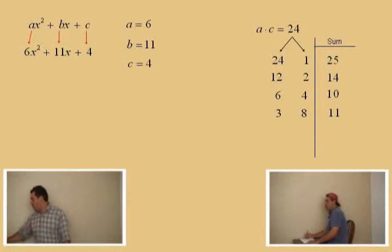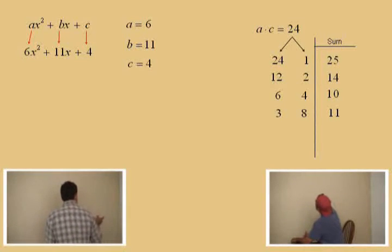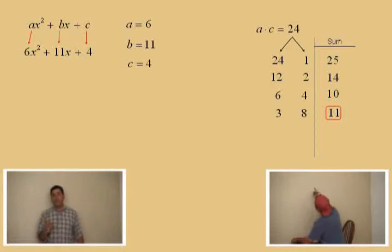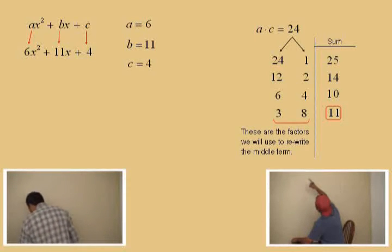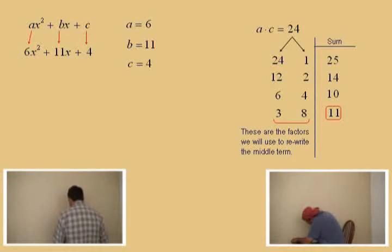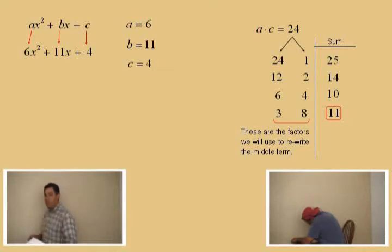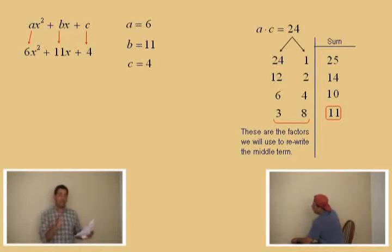So, there we are. Those are the factors there. The 3 times 8. Those are the factors of 24 that sum to 11. So, let's circle out 11. And write this note here. These are the factors we will use to rewrite the middle term. 3 and 8. Now, you can have those in any order. You could put 8 times 3 or 3 times 8. You'll see what I mean.